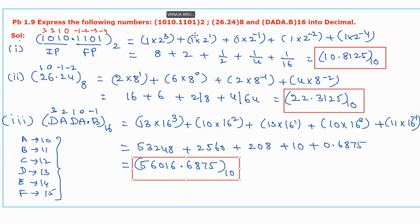These are the equivalent decimal values for the given binary, octal, and hexadecimal numbers. This is the solution for the given problem. Thank you.